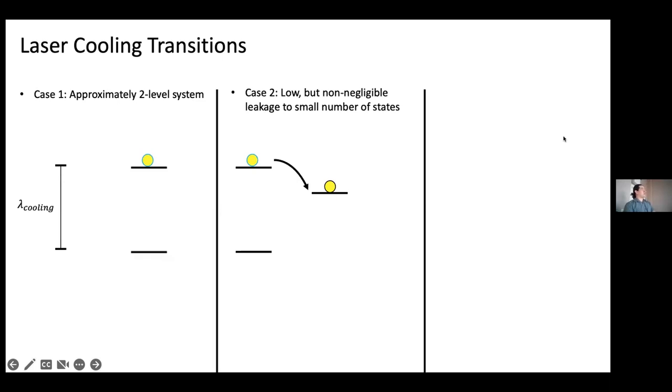The second case is you have low but non-negative leakage to other states. So in this case, every so often, maybe you scatter a thousand photons and then your electron goes to this state. What you can do is apply what's called a repump laser that is resonant with this transition and sends this electron back into the cooling cycle. And again, you're happy and life is good.